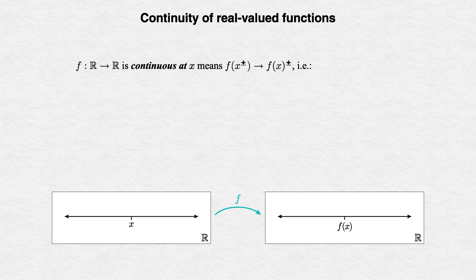The formal logical definition of the statement that f is continuous at x comes out the same. The main question is how close to f(x) do these outputs need to get? The answer is as close as we like. We measure the distance with a positive value epsilon, and start our definition with 'for all epsilon greater than zero.' This gives us a target for our output points exactly as it did for sequence convergence.